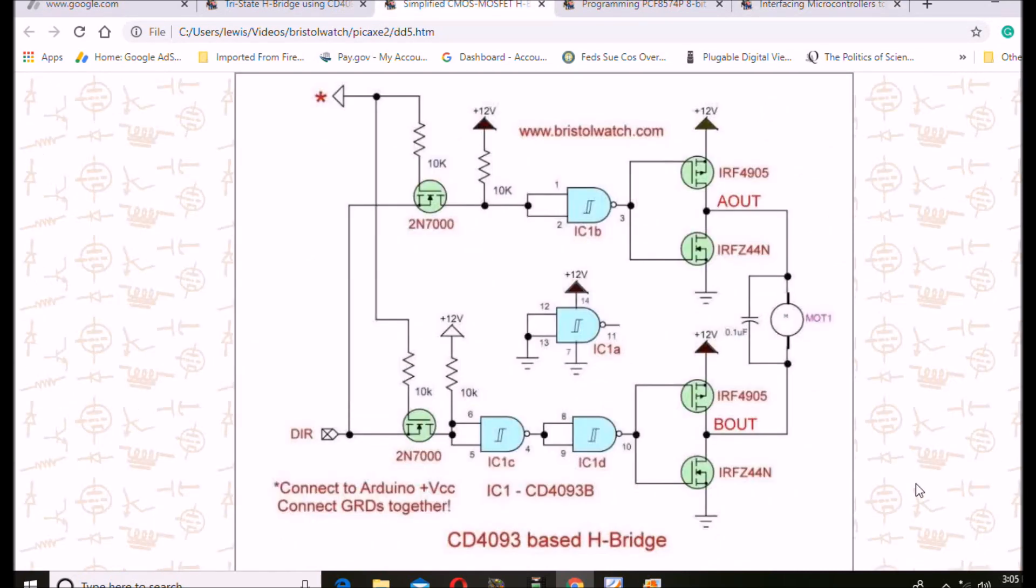Alright, here we are back again. Here is a simplified H-bridge circuit. I used a CD4093, it's a CMOS part. It consists of four two-input NAND gates with Schmitt trigger inputs. I only needed three of the four, and whatever gates you're not using, you need to tie the inputs to ground and so forth.